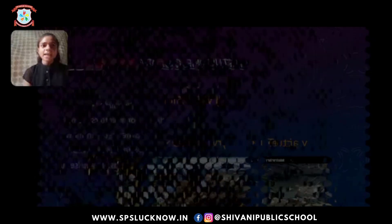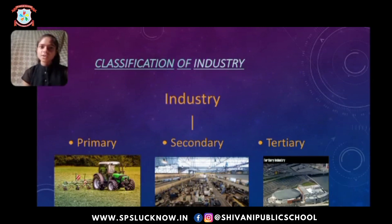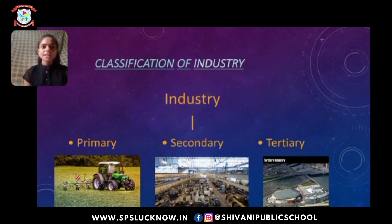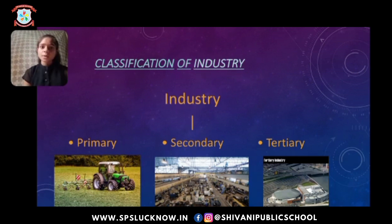Next topic is classification of industry. Industry is classified into three main parts: primary, secondary, and tertiary. Primary industries are concerned with the production of natural resources, for example, agriculture, fishing, etc. Secondary industries are concerned with the use of materials already extracted at the primary stage, for example, steel production, automobile manufacturing, sugar production, etc. Tertiary industries provide support to primary and secondary industries for their development, for example, through banking, insurance, etc.